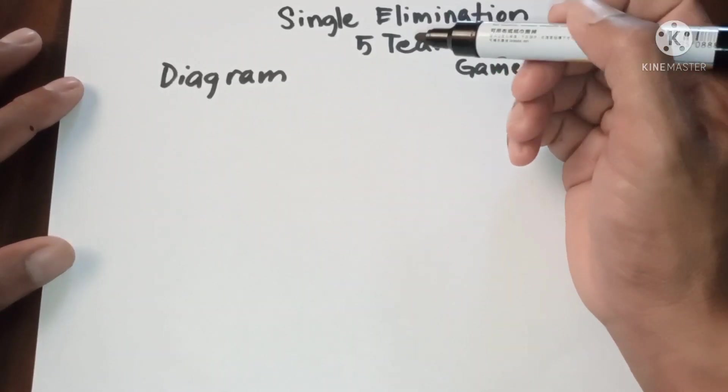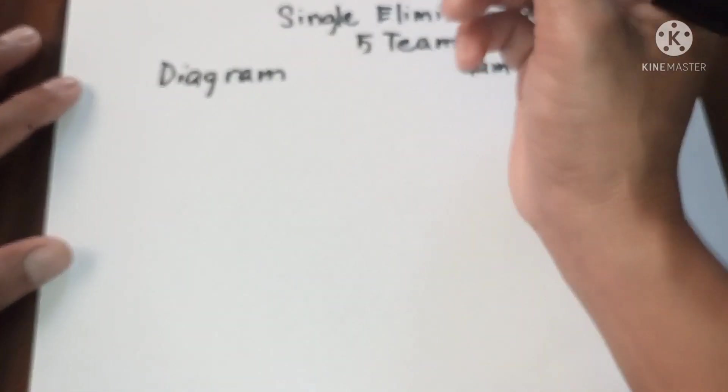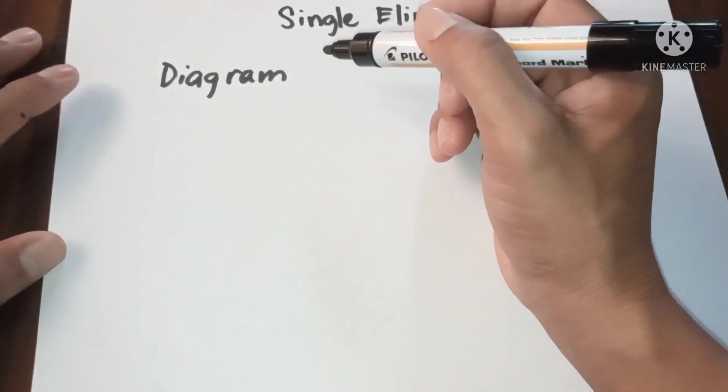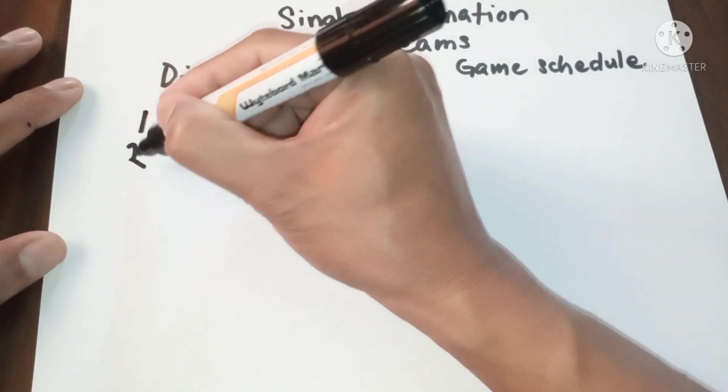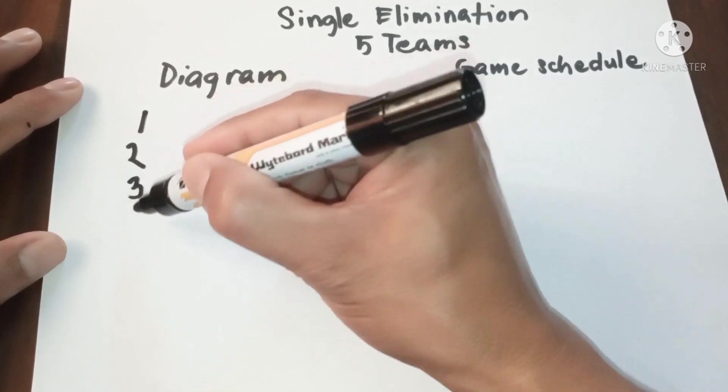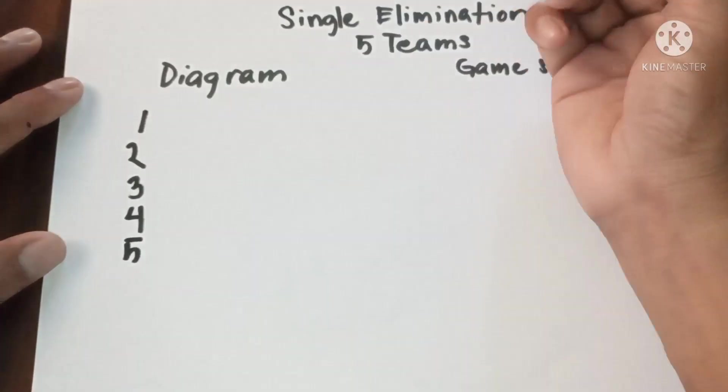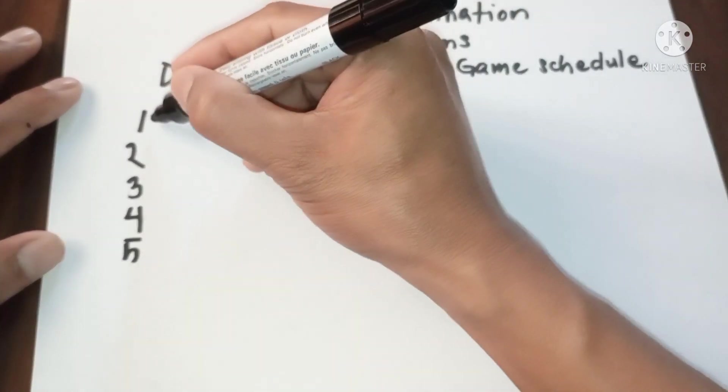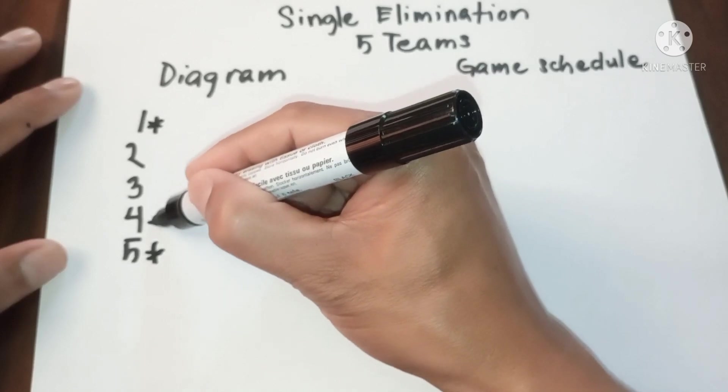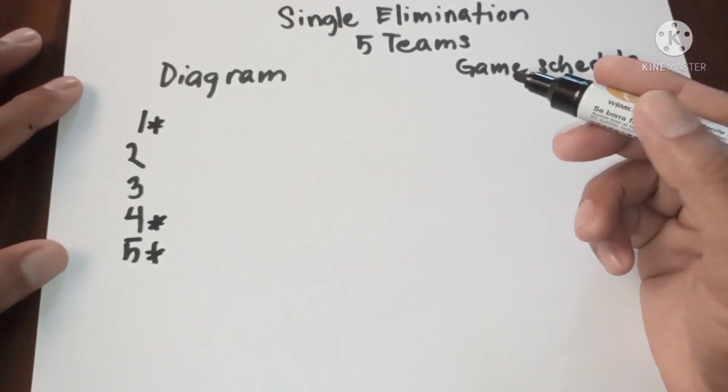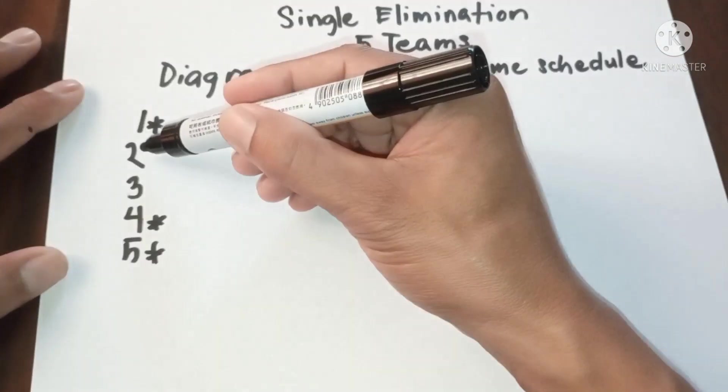Okay, let's start with the diagram for five teams. So we should write the number of teams vertically downward: one, two, three, four, five. And by placing asterisks on one, five, and four. Now we have two competing teams in the first round, so two and three.